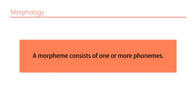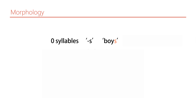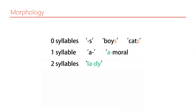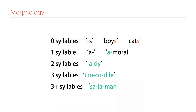We already discussed that a morpheme consists of one or more phonemes. A morpheme can consist of zero syllables, such as the 's' in 'boys' or 'cats'; one syllable, such as 'a' in 'amoral'; two syllables, such as 'lady'; three syllables, such as 'crocodile'; or even more, like 'salamander' — which is one morpheme, one semantic unit.